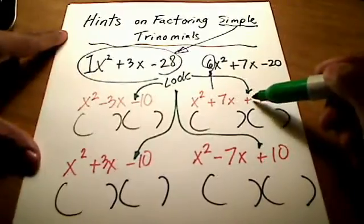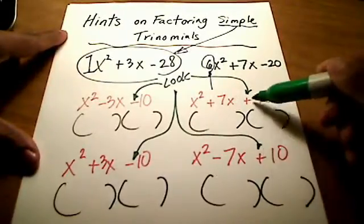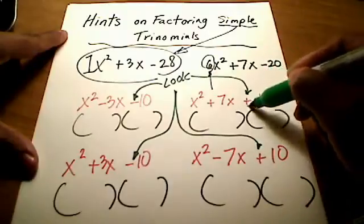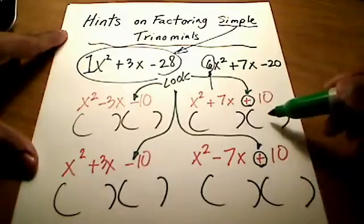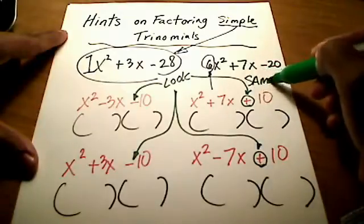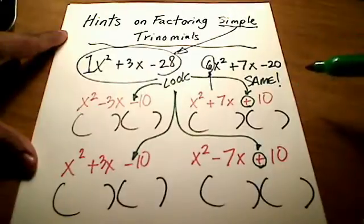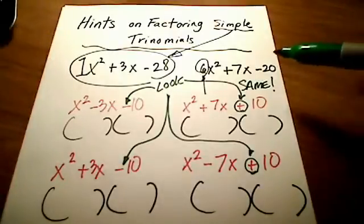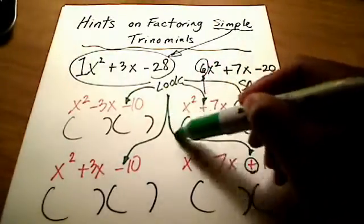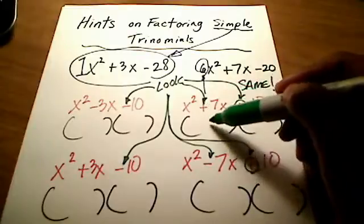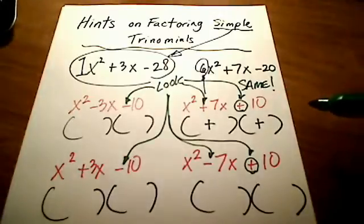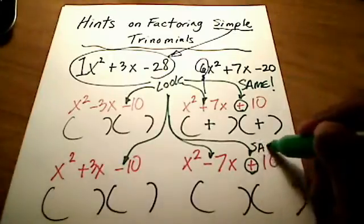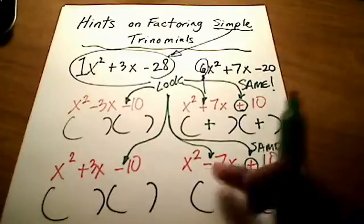Whenever you see a plus sign at the very end, that is a big hint that the signs inside the two parentheses are going to be the same. That's all this plus sign means — these two signs are both going to be the same. Then the question is: are they both going to be plus or both going to be minus? That's when I look second at the middle term. If I see a plus sign in the middle, they're both automatically going to be plus. If I see a minus sign in the middle term, they're both going to be minus.